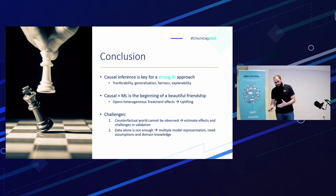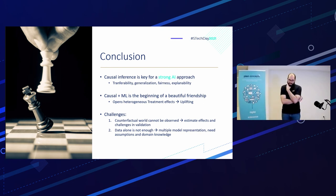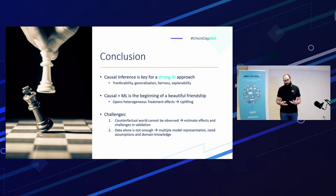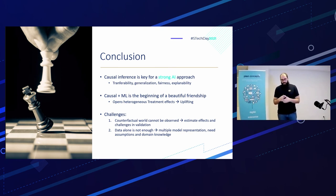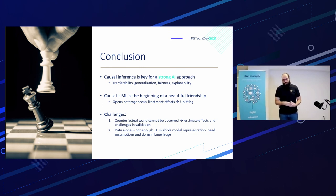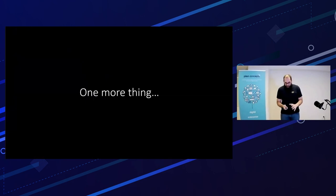To conclude, causal inference is key to a stronger approach and helps with transferability, generalization, fairness, and explainability. Causal plus ML is the beginning of a beautiful friendship. However, there are also challenges: we cannot fully measure the counterfactual world, making validations difficult. Data alone is not enough — we also have multiple possible model representations and need domain knowledge to create the causal graph.